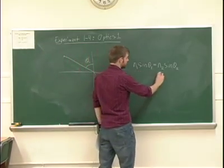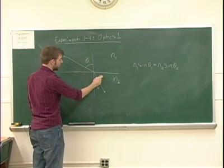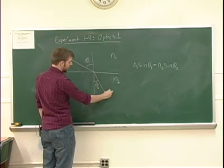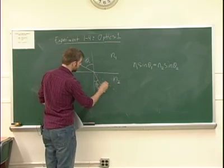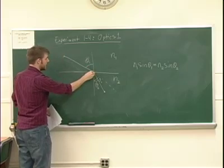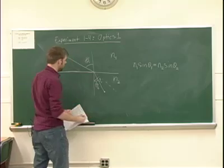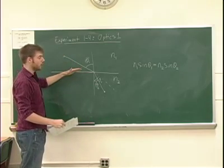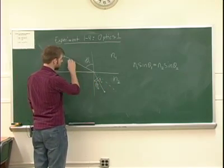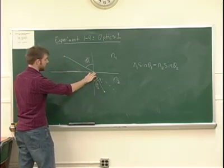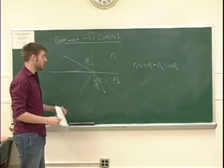If instead of going from air to water you go from water to air, as you increase angle θ2, θ1 gets larger and larger. At some critical angle, θ1 reaches 90 degrees and goes straight along the edge. If you make the angle larger than that, there's no room for θ1 to grow, and hence there is no refraction — only internal reflection. After this critical angle, you can't refract at all; all of the light has to be reflected. This is called total internal reflection.